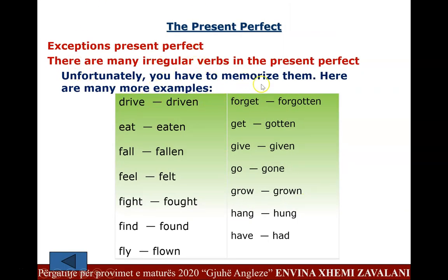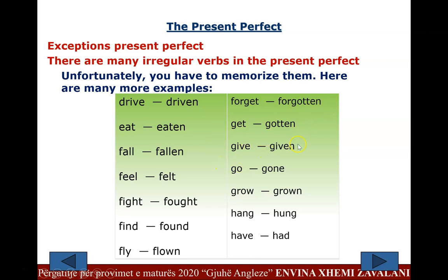Let's continue with irregular verbs you must memorize: drive/driven, eat/eaten, fall/fallen, feel/felt, fight/fought, find/found, fly/flown, forget/forgotten, get/gotten, give/given, go/gone, grow/grown, hang/hung, have/had.